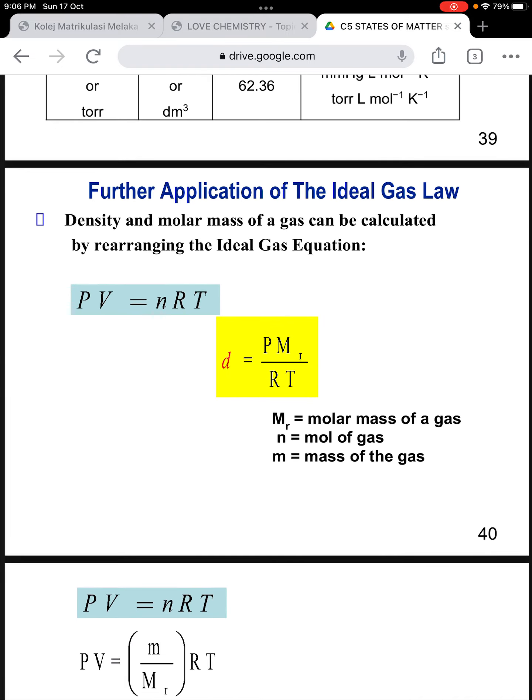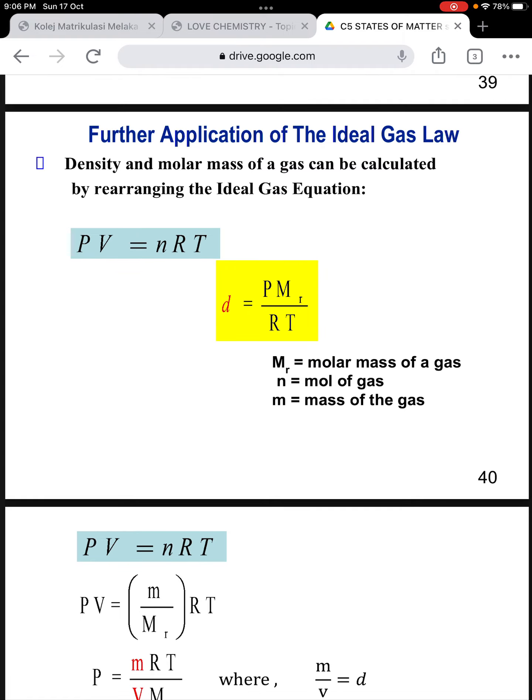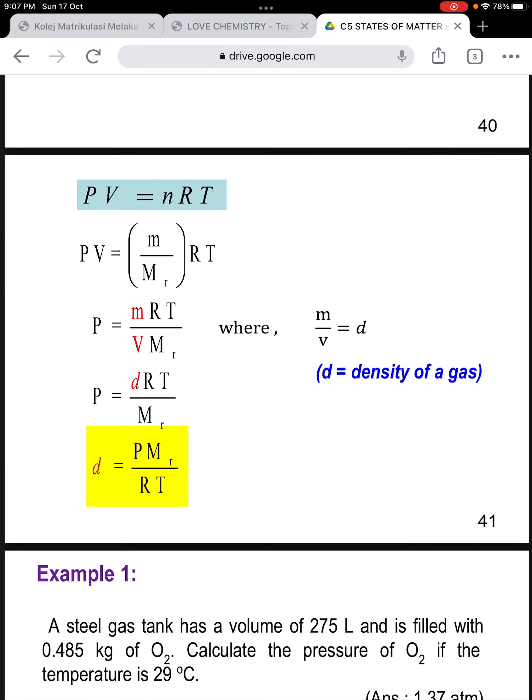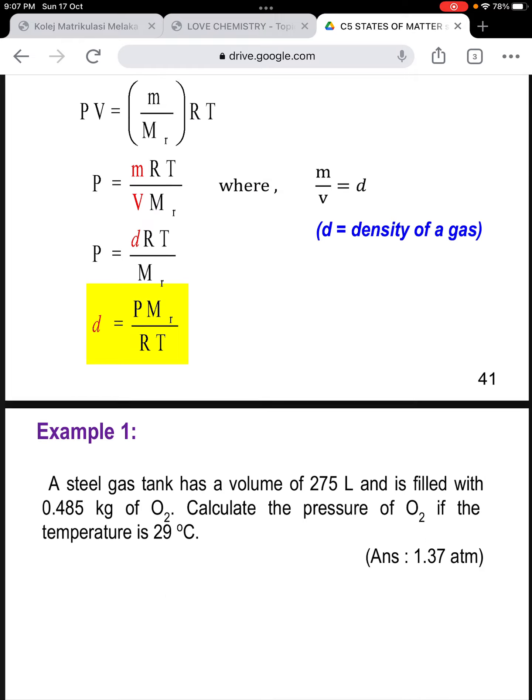Further application of the ideal gas law: density and molar mass of a gas can be calculated by rearranging the ideal gas equation. The expression in the yellow box relates the density of the gas from the parameters pressure, molar mass, ideal gas constant, and absolute temperature. The formula is density equals pressure multiplied by molar mass over universal gas constant multiplied by absolute temperature. This is how the formula is derived. Here they already show the steps.